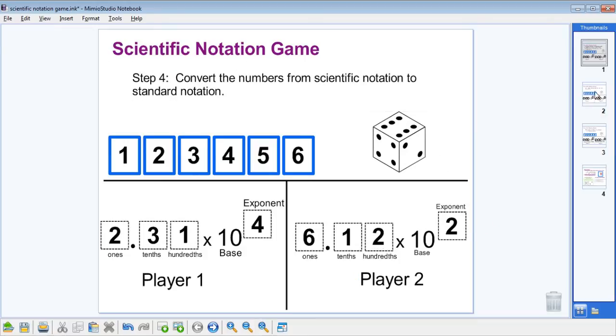For the next step, both players will convert the numbers from scientific notation to standard notation. Multiplying a decimal by something to the fourth power will make that decimal point move four places to the right, because we're multiplying by ten thousand.